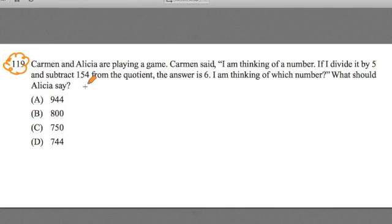So it's a really good idea to understand those core concepts. Now this problem here uses a little bit of algebra and a little bit of number sense and operations. Let's review it. Carmen and Alicia are playing a game. Carmen said, 'I'm thinking of a number. If I divide it by 5 and subtract 154 from the quotient, the answer is 6.' I'm thinking of which number? What should Alicia say?